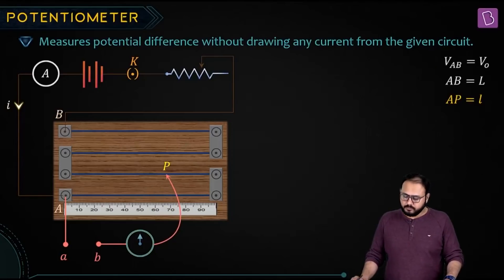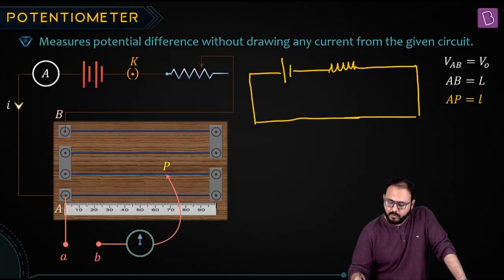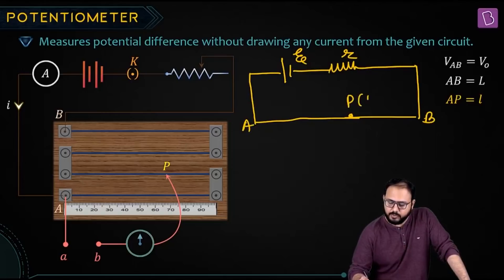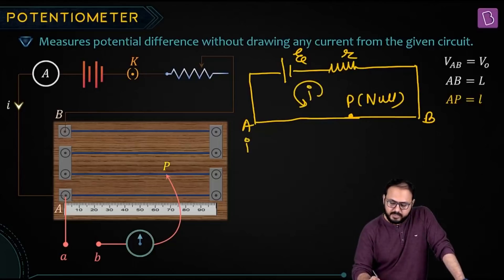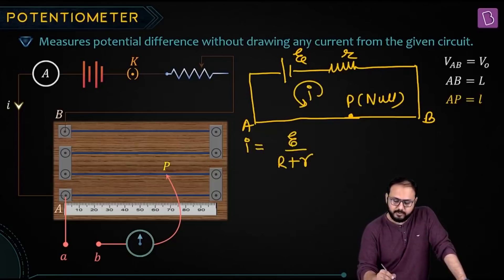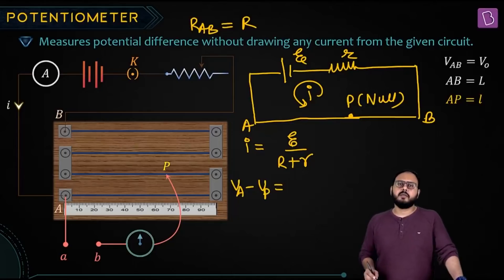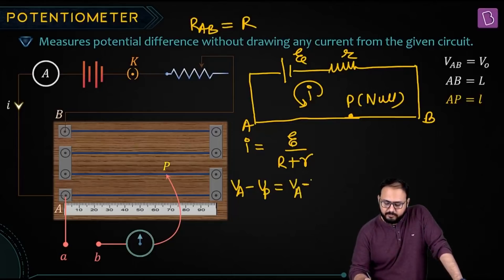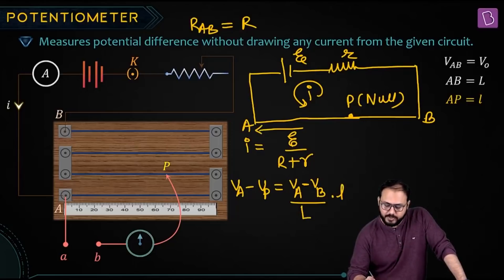Do you remember A and P? Again I will draw the primary circuit. Do you agree that now I don't even need to draw the secondary circuit? All I need is E, small r, A, B, and P — where P is the null point. Current in the primary circuit is I = E upon (r + R). The entire AB wire has resistance R. If I ask you what is VA minus VP? By unitary method: VA minus VB per unit total length, multiplied by small l — and small l is this length.